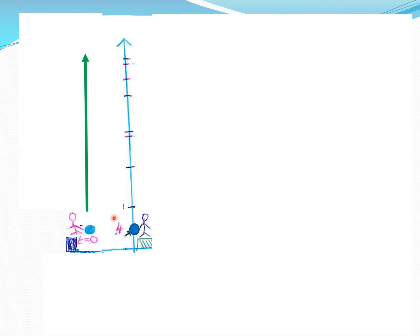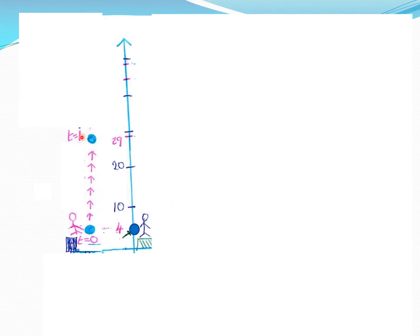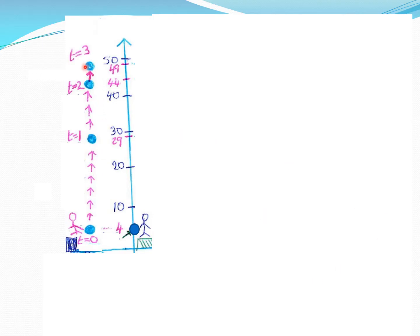The initial height is 4 meters — someone standing on a podium. The ball is propelled vertically upward at 90 degrees. After one second the ball has reached a height of 29 meters; after two seconds, 44 meters. It's beginning to slow down. At three seconds the height is 49 meters, and we expect the ball to turn around at some stage.